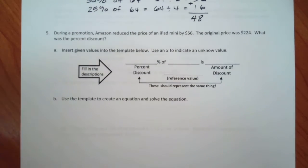Now we're going to get into some examples where you are going to have to figure out what goes in what category. During a promotion, Amazon reduced the price of an iPad mini by $56. The original price was $224. What was the percent of the discount?